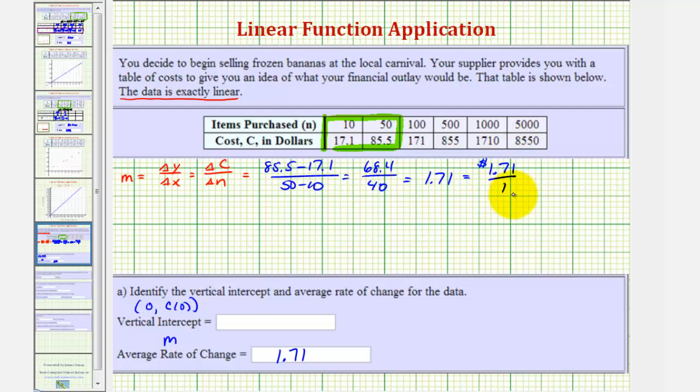And now to determine the vertical intercept, or the y intercept, we'll go ahead and find the equation of this linear function in the form y equals mx plus b. But in our case, y is actually c, and we know the slope is 1.71. Instead of x, we're using n, and now we'll select one point from the table, perform substitution for n and c to solve for b, which would be our vertical intercept.